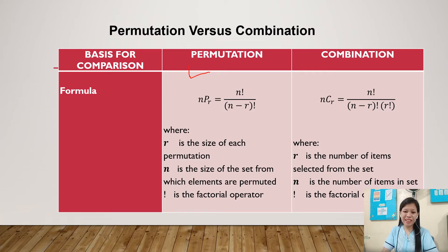The formula for permutation: the permutation of n objects taking r at a time is equal to n factorial over n minus r factorial, where r is the size of each permutation, n is the size of the set from which elements are permuted, and the exclamation mark is the factorial operator.